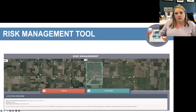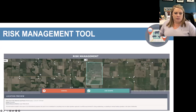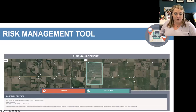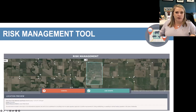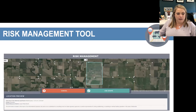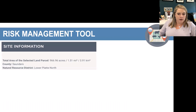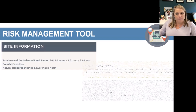I'll briefly show you the three tools. The first is the Risk Management Tool. It has a Google Maps interface where you zoom in, find the parcel of land you're interested in assessing, and draw a boundary around it. Once you have that boundary, you can cancel and redraw if it doesn't come out right. Once you're satisfied, clicking the shape will start generating the report. I'm showing a few highlights of that report here — we provide site information.